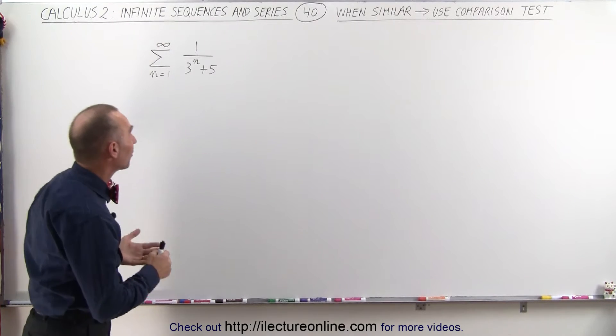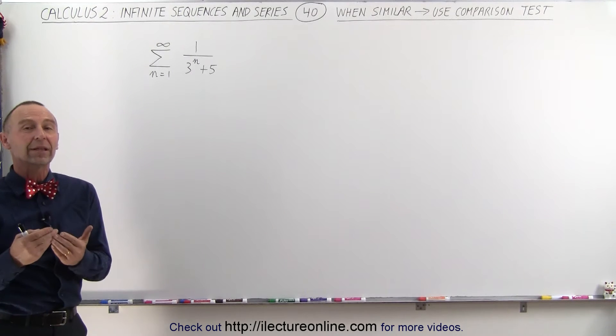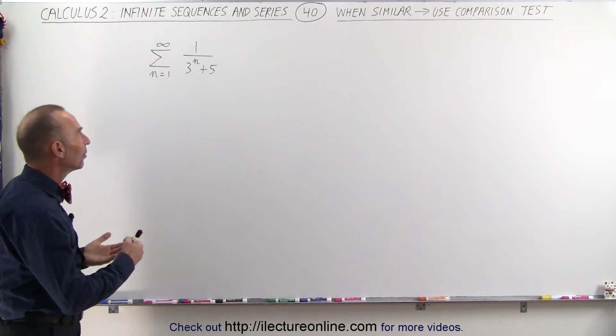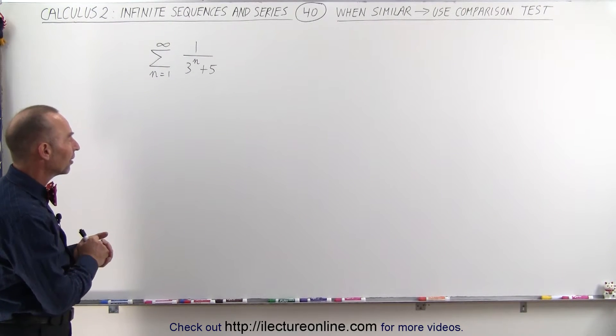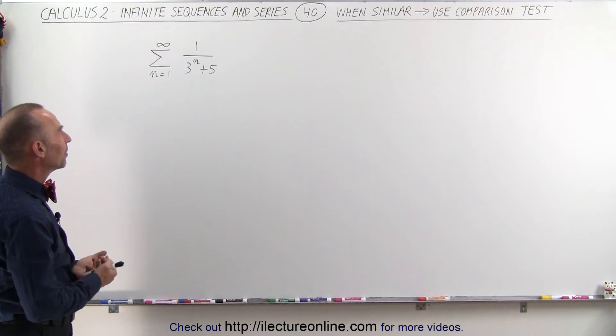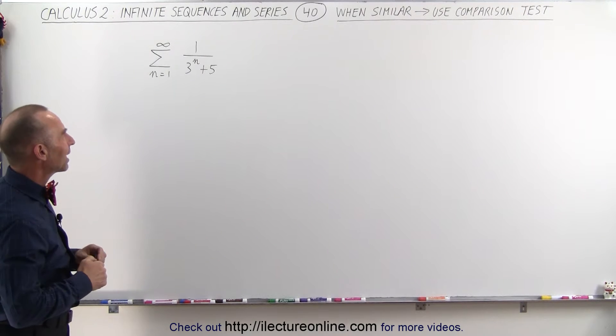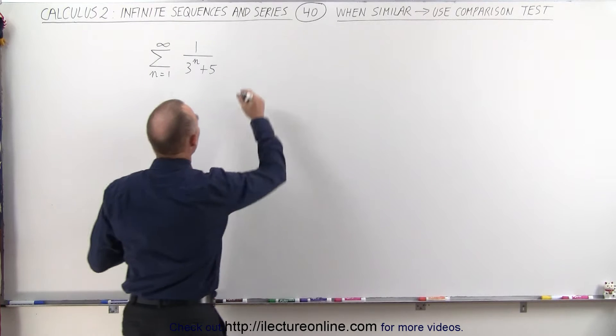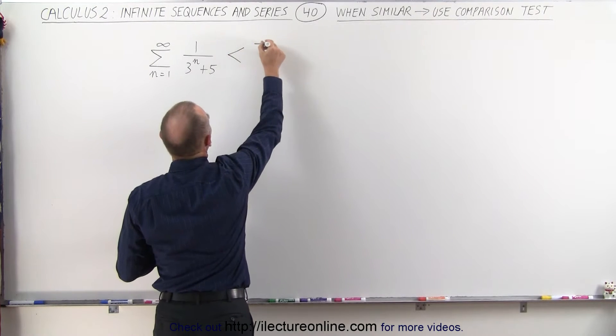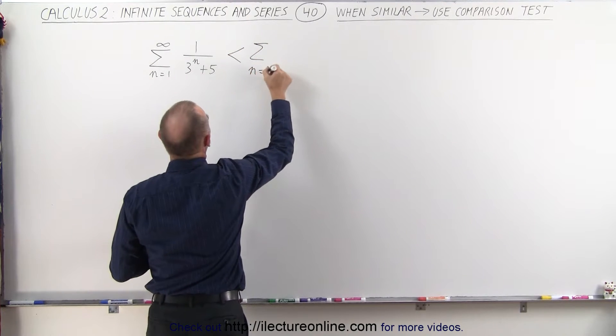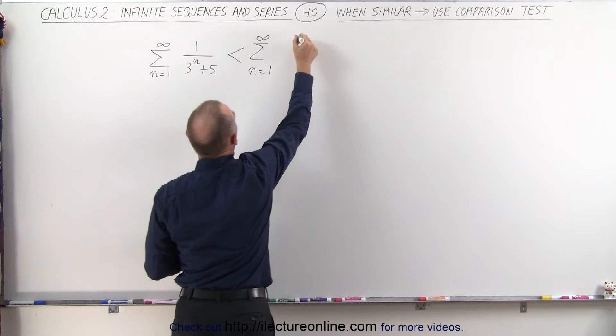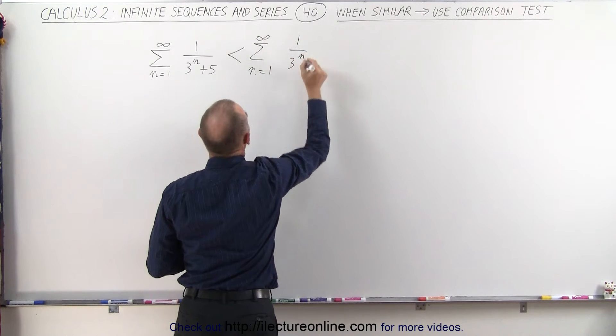Sometimes we end up with an infinite sum that looks very similar to one that we can easily find the convergence or divergence of, and we can find the sum of. You can see here that this can be written to be smaller than the infinite sum for n equals 1 to infinity of 1 over 3 to the n power.